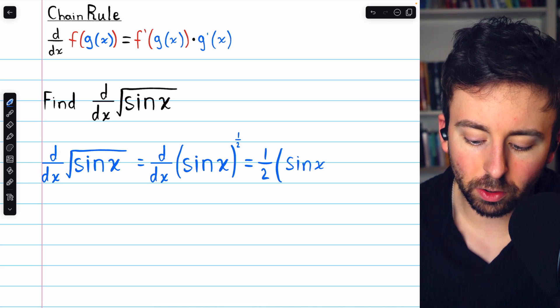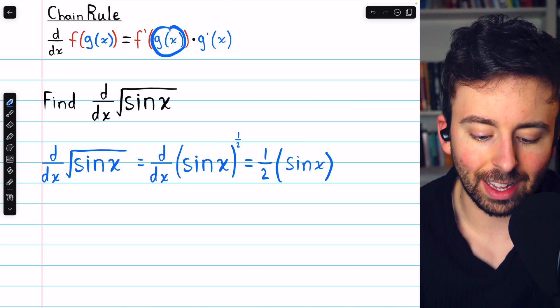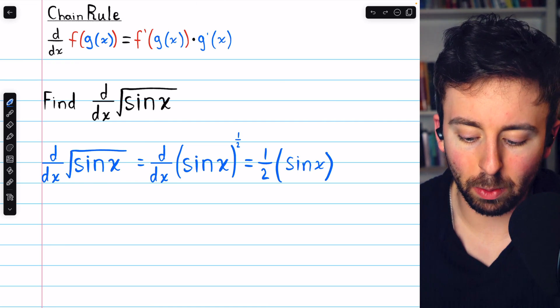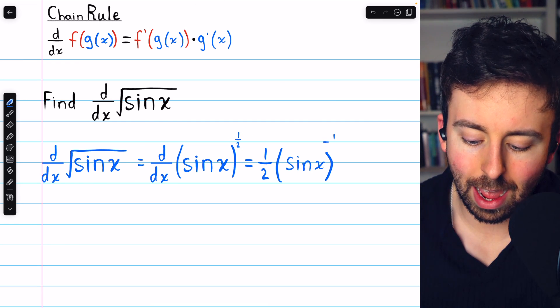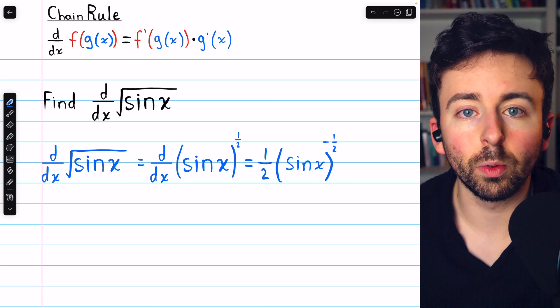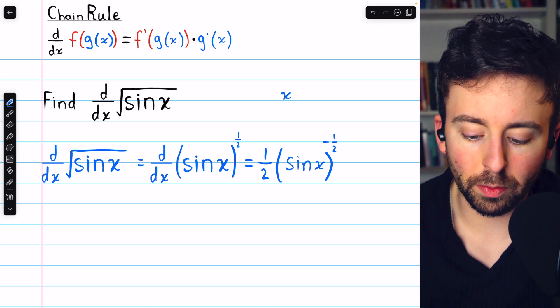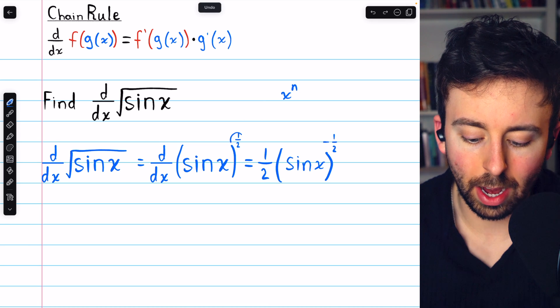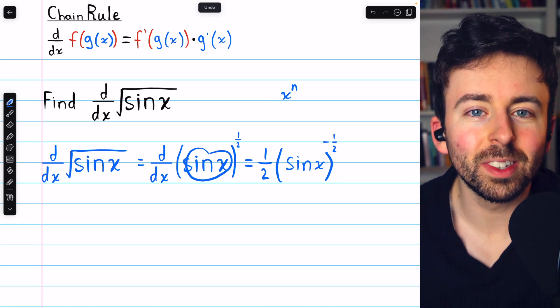We leave the inside function unchanged, right, g of x, that just doesn't change, and then reduce the power by one. That's power rule. So instead of one-half, we now have negative one-half. It's just like taking the derivative of x to the n, except in this case, n is one-half and x is sine x.